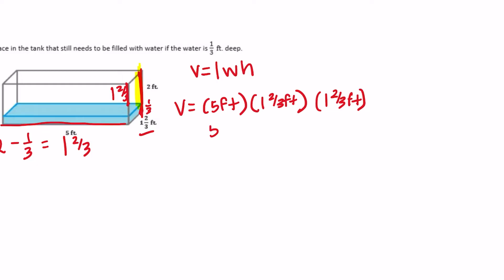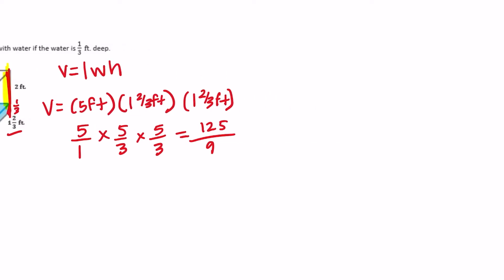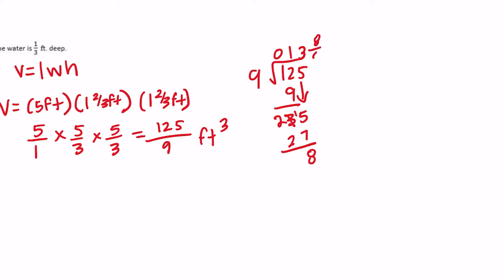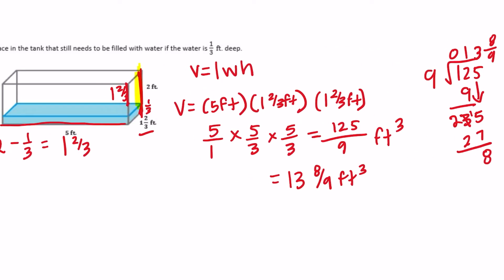Now calculating the volume of the unfilled space: 5 times 5/3 (which is 1 and 2/3 as an improper fraction) times 5/3. That's 5 times 5 times 5 equals 125, and 1 times 3 times 3 equals 9, giving 125/9. Converting to a mixed number: 9 goes into 125 thirteen times (that's 117), with 8 left over, so the volume is 13 and 8/9 feet cubed.